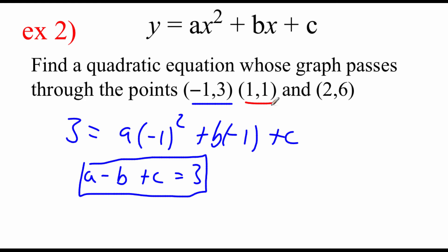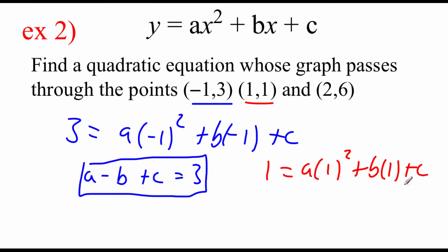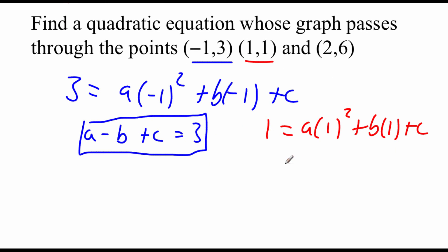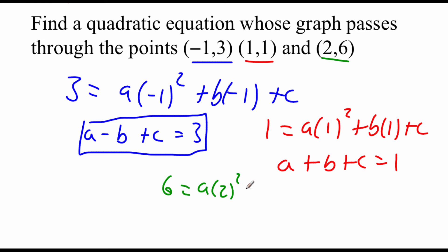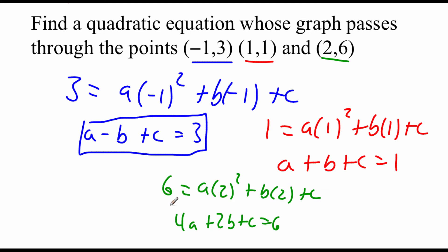We've also got the ordered pair 1 comma 1. So 1 equals a times 1 squared plus b times 1 plus c. Simplifying: 1 squared is 1, giving us a plus b plus c equals 1. And then lastly we've got the 2 comma 6 ordered pair. So 6 equals a times 2 squared plus b times 2 plus c. Two squared is 4, so we've got 4a plus 2b plus c equals 6. So here are the three equations that we're going to use in our system.